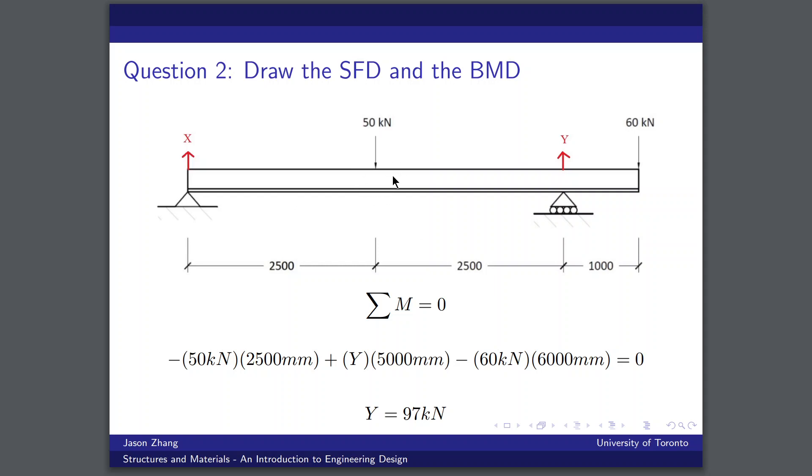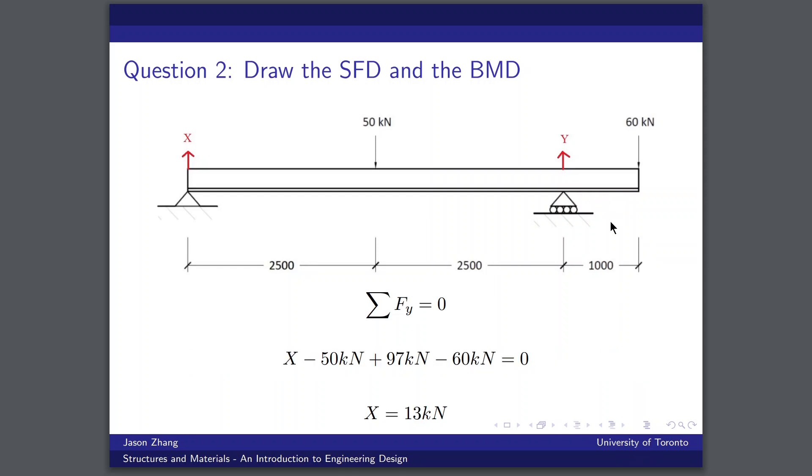So we know that one moment is produced by this load of 50 kilonewtons. One moment in the opposite direction is created by this reaction force and a third moment is caused by this point load of 60 kilonewtons. And doing the summation and solving for y, we find that y is equal to 97 kilonewtons. Then we can use the fact that the beam is not accelerating up or down to do a force balance in the y direction in order to solve for the reaction force x and we find that x is 13 kilonewtons.